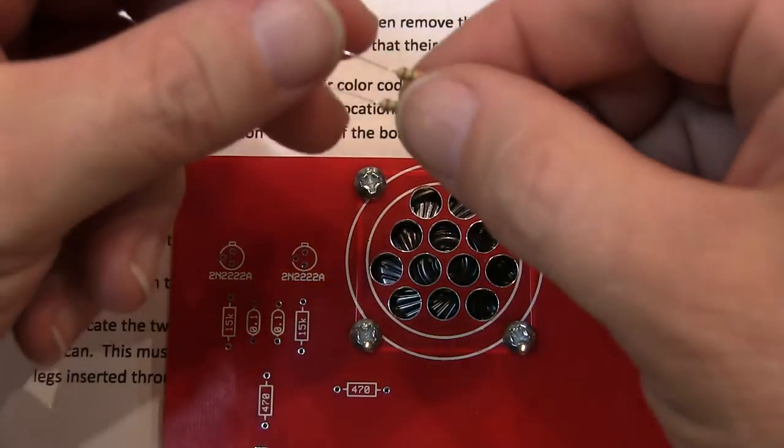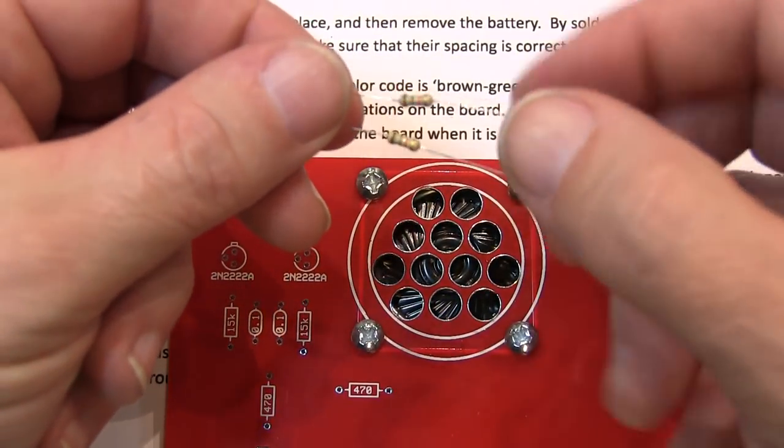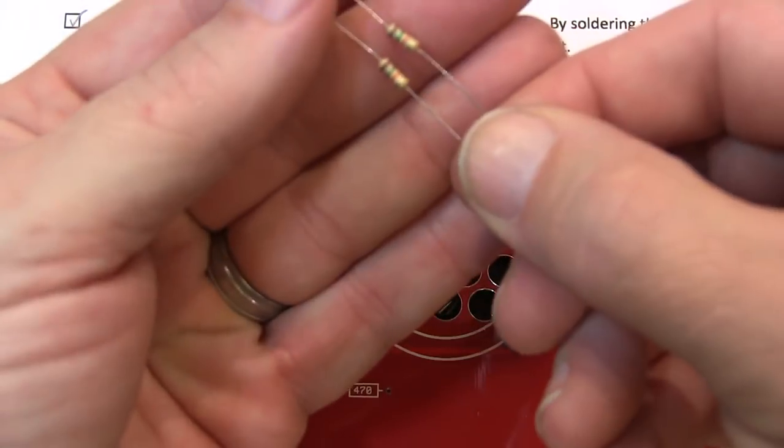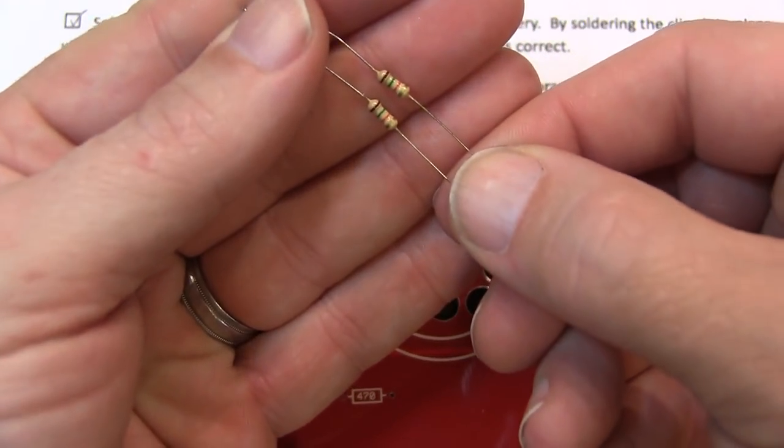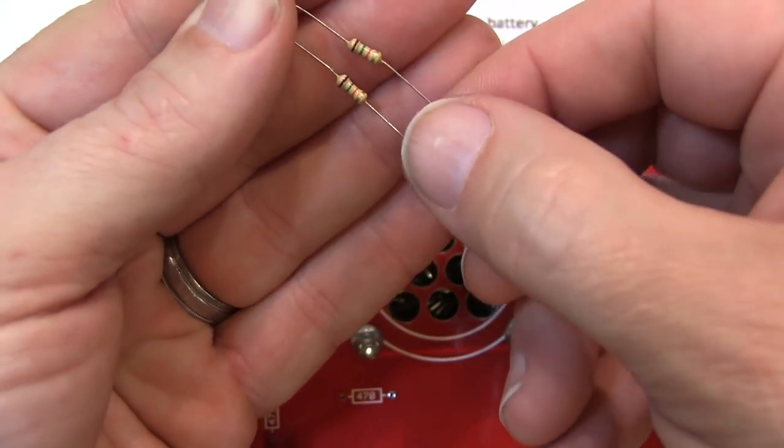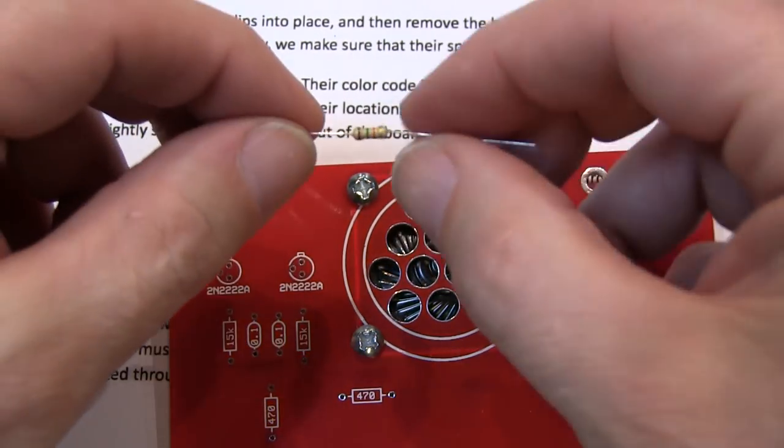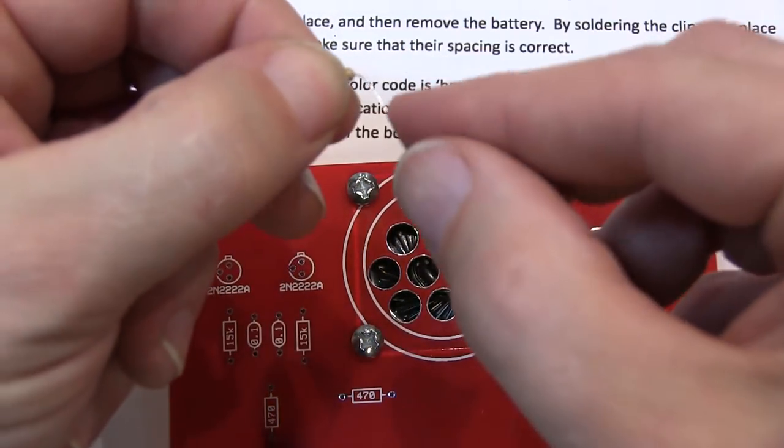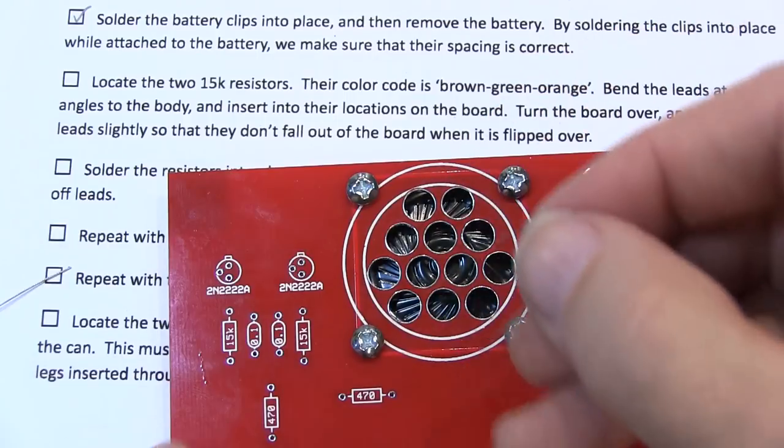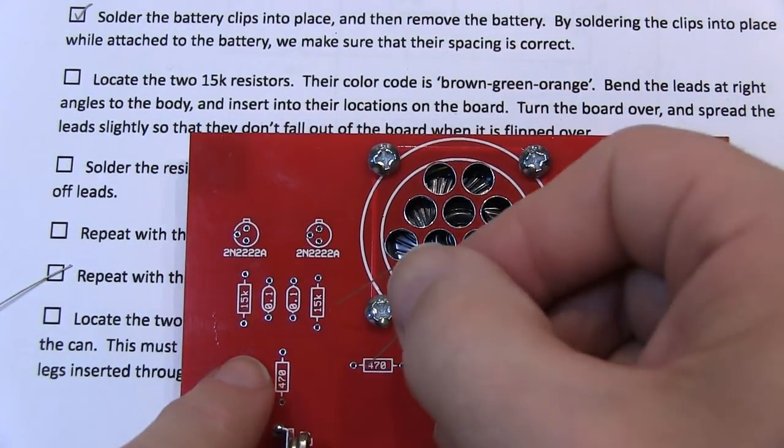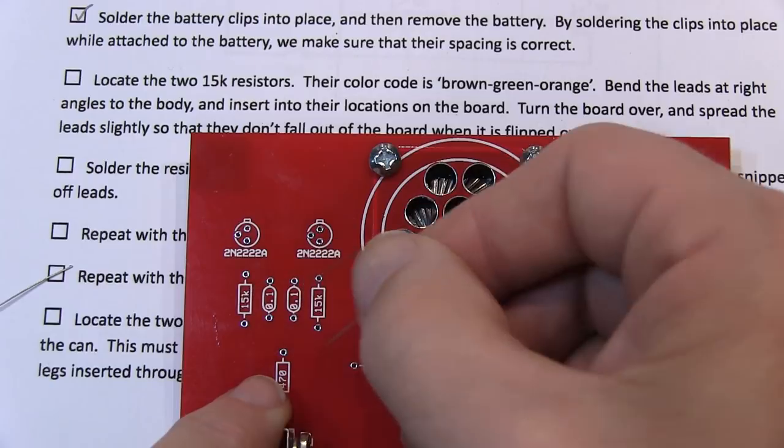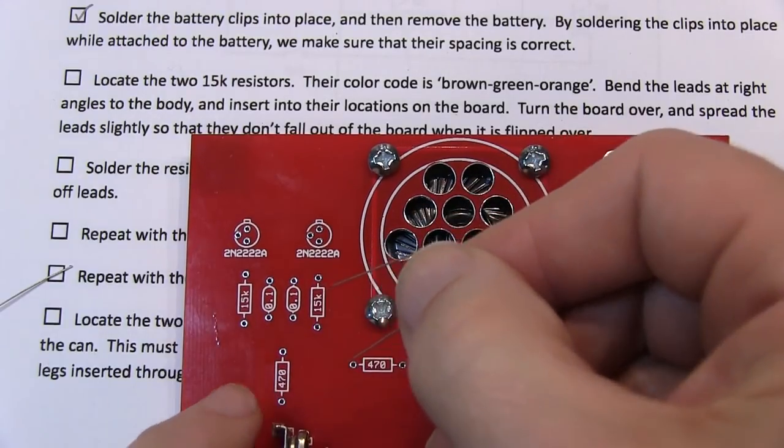The next step is to locate the two 15k ohm resistors. These are the ones that have a brown, green, and orange marking with a gold band on the end. And for each of those resistors, we'll take and bend the leads at a 90 degree angle, and then we can insert them into their locations on the board. You'll see a marking for 15k and 15k. So insert both of them into the board now.